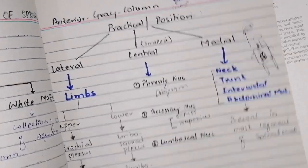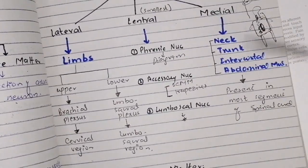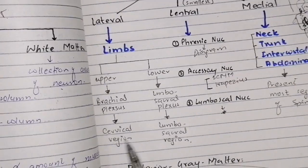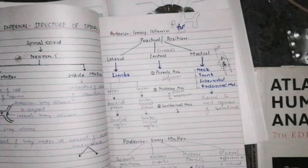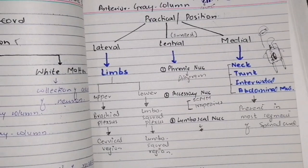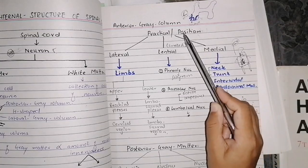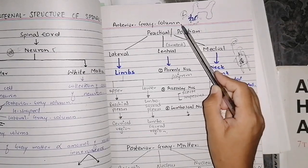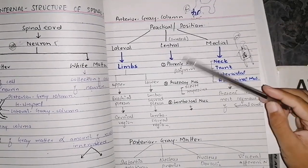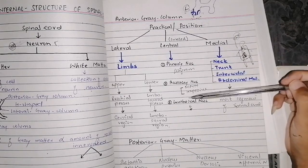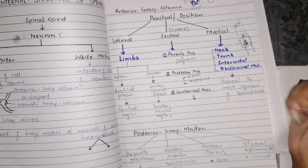So throughout the spinal cord, medial is present; lateral is in cervical and lumbosacral regions. The central group includes the phrenic nucleus supplying the diaphragm, the accessory nucleus supplying the sternocleidomastoid and trapezius, and the lumbosacral nucleus whose detailed distribution is not covered here.